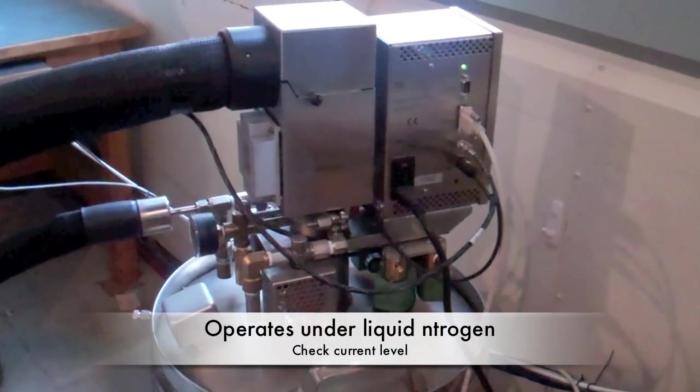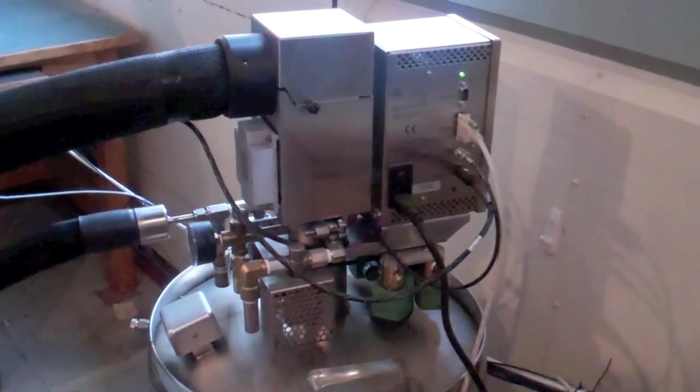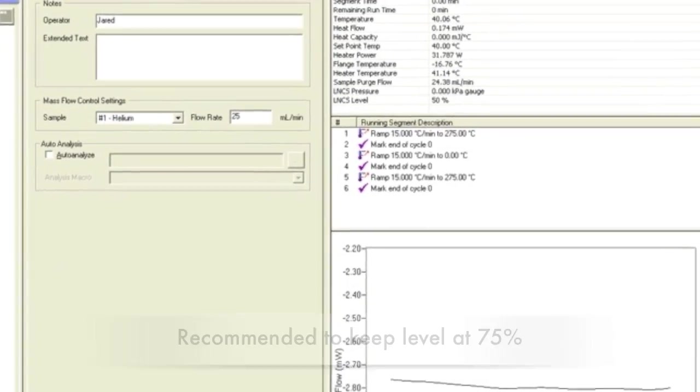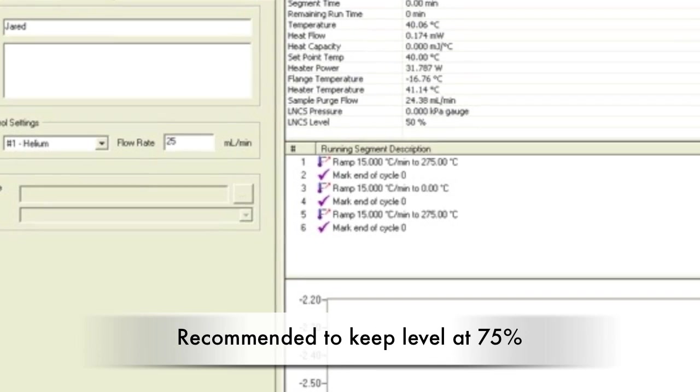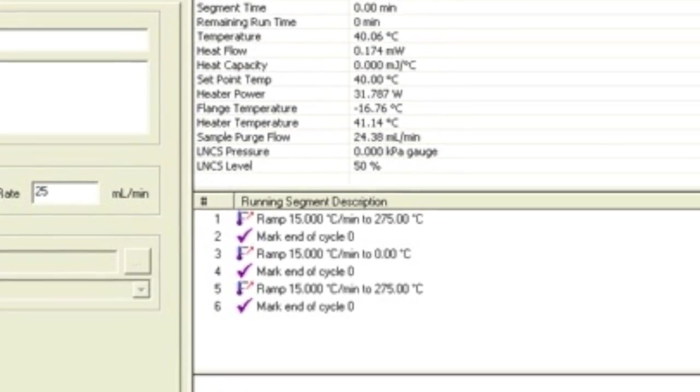This DSC operates under liquid nitrogen. Check the liquid nitrogen amount or percent before starting a run. As a rough estimate, the minimum amount of liquid nitrogen needed for one run is around 15%, but it is recommended to keep the level at 75% if many measurements are to be performed in a given day.